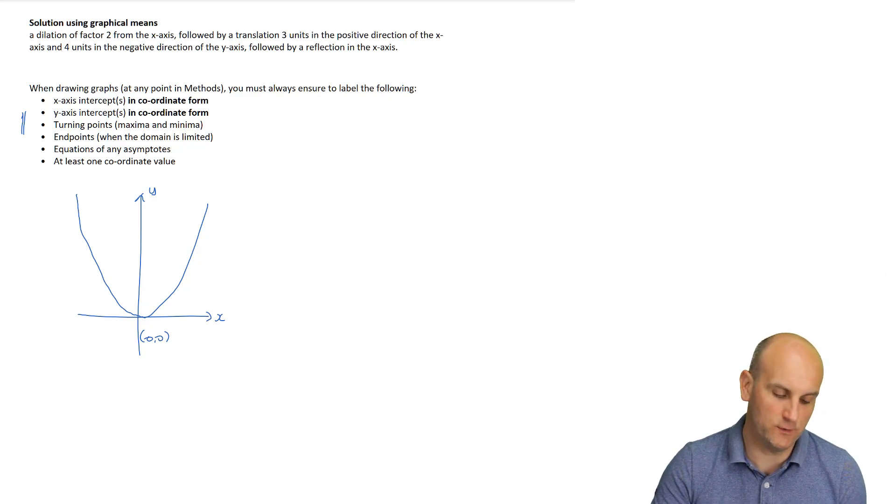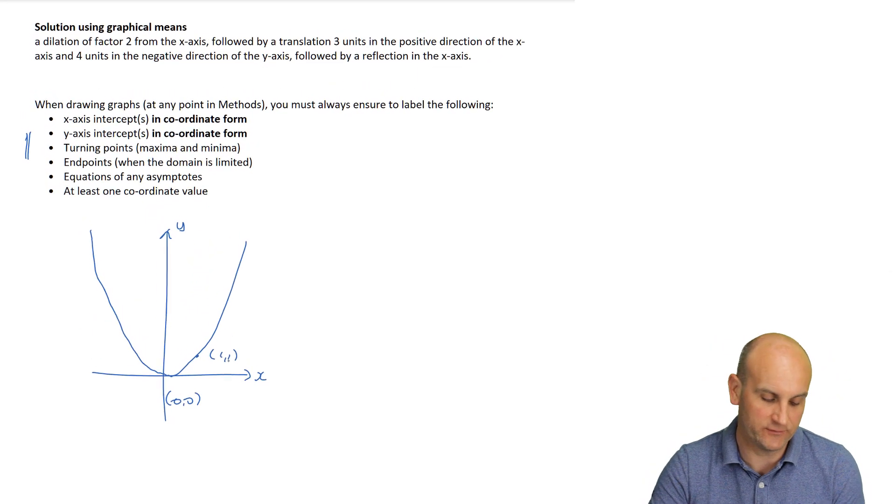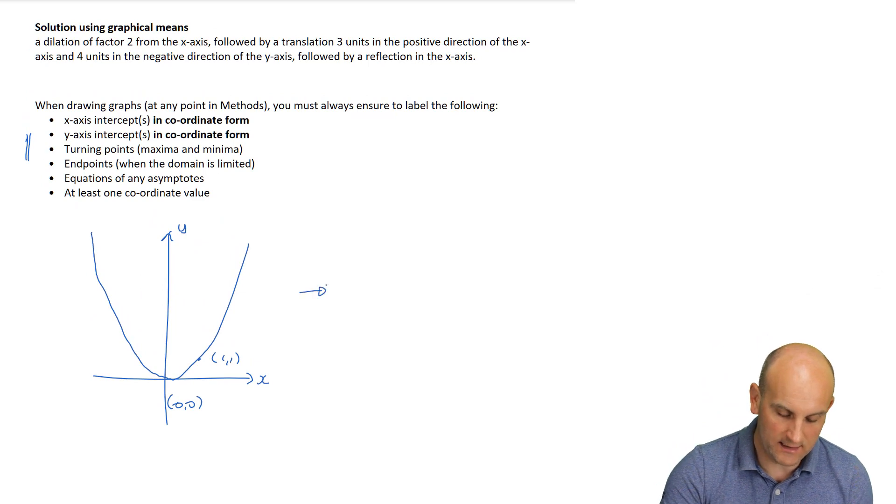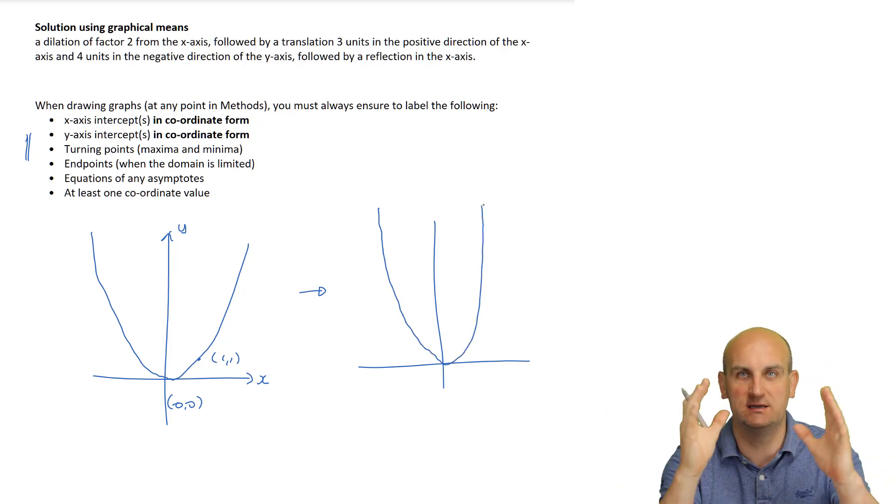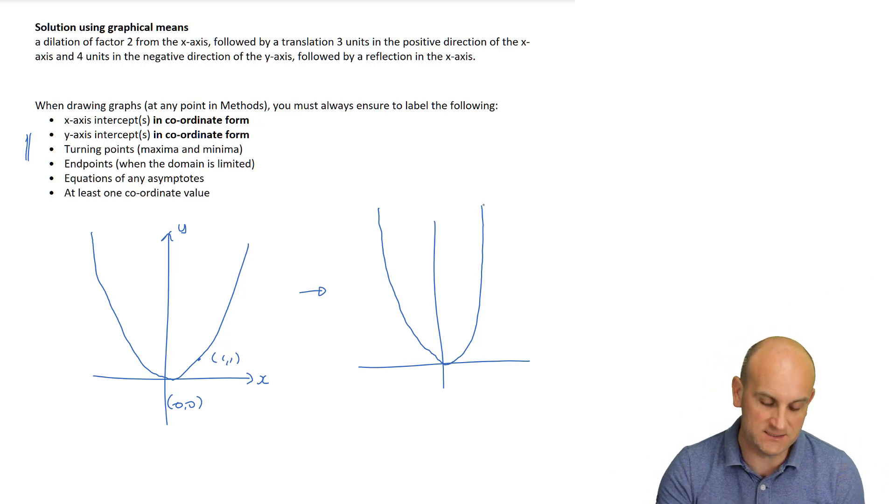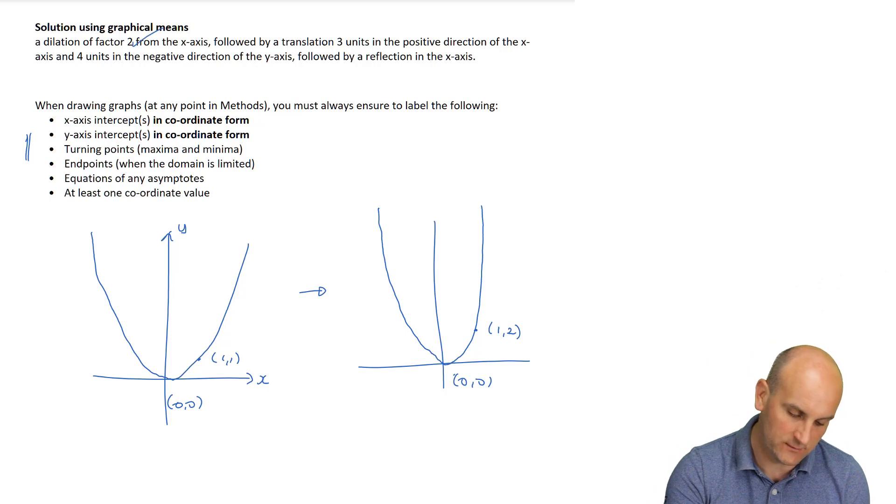So we're going to dilate a factor two from the x-axis. Now, when we have a dilation, we actually need to show the examiner that that has actually been dilated. So the first thing I'm going to do is I'm actually going to put another point on, and it's great how many graphs have one comma one as one of the key points. So then I'm going to now draw a very quick sketch and say, right, well, I now know that that's going to actually get narrower. Do you have to show that in a method exam? Do you have to show that it's narrower? Absolutely, yes. The examiners are looking for that type of stuff. Now, obviously, if it's a dilation away from the x-axis, that stays a zero, zero. But this point here now becomes one comma two. Yep, my y values have doubled.